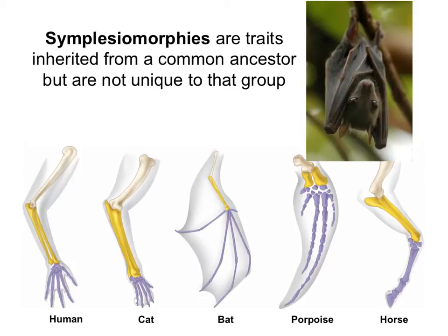Let's say we're looking at bats and we want to know whether the presence of forearms in bats is something unique to them or not. Bats do have forearms, but so do humans, cats, porpoises, and horses — all tetrapod vertebrates have four limbs. This is not unique to bats; it's present in reptiles and amphibians as well. This is an ancestral trait, and it's a symplesiomorphy.